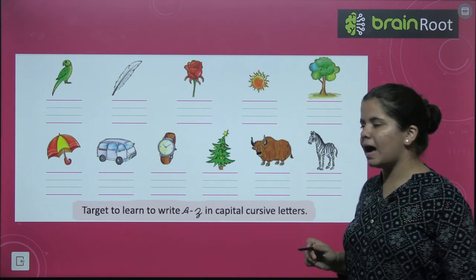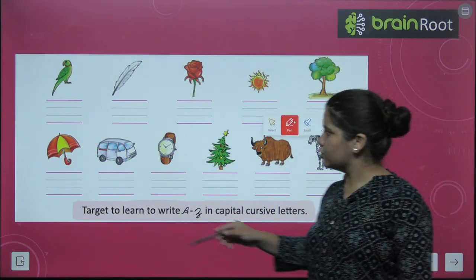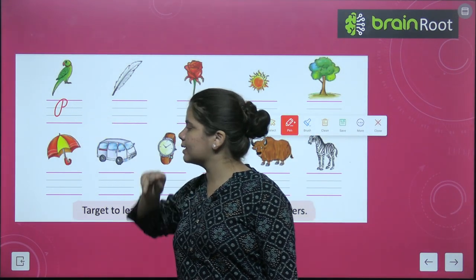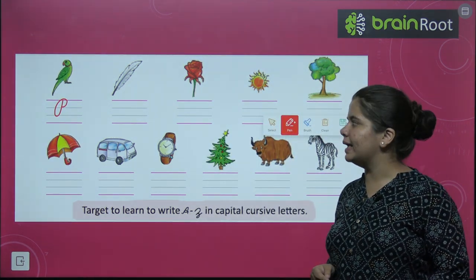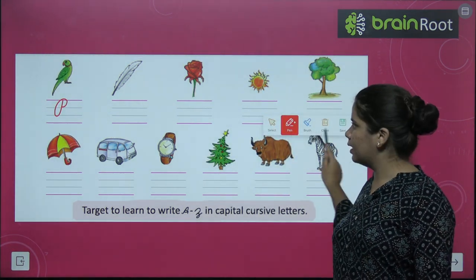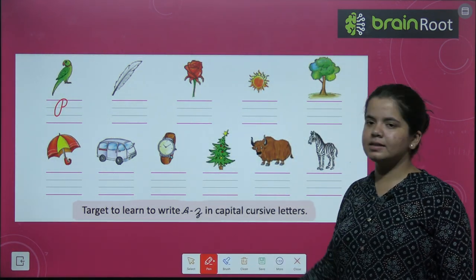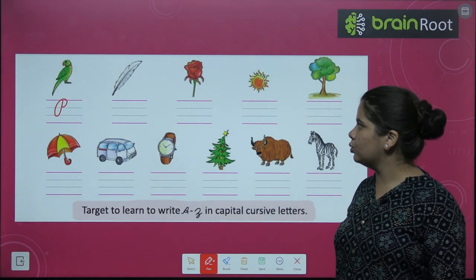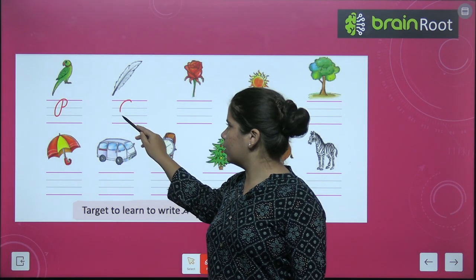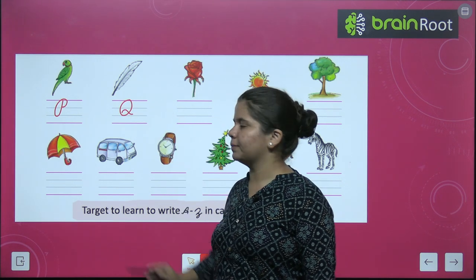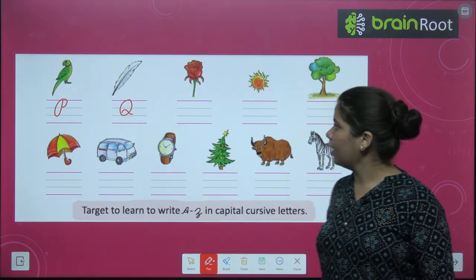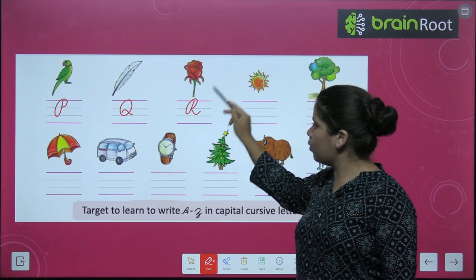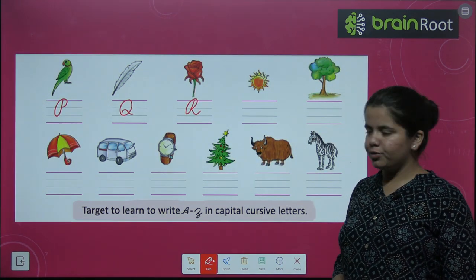We have P for parrot. Can you write P? Yes, absolutely. We have written P. P for parrot. Next, we have Q. Q for quill. So, we wrote Q. Next is R for rose. R for rose.